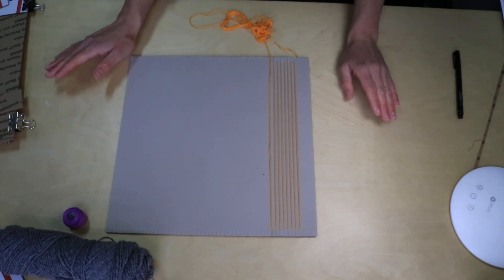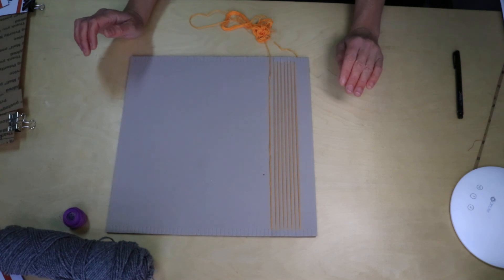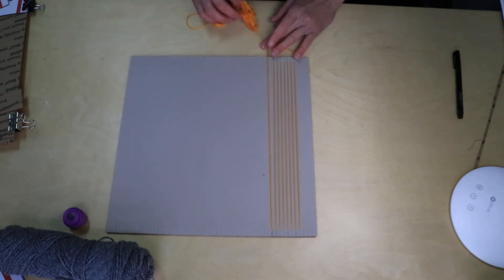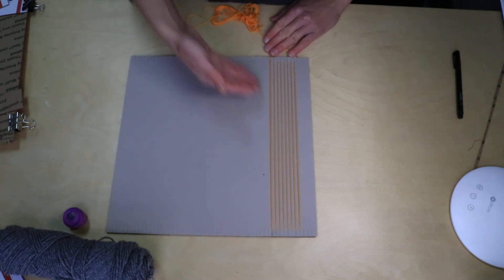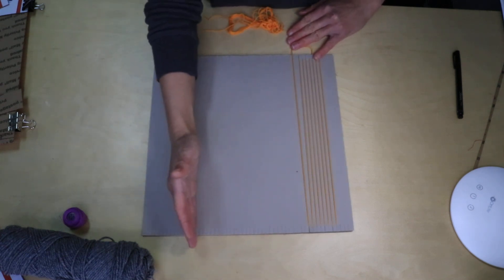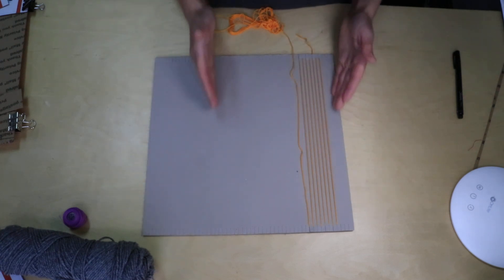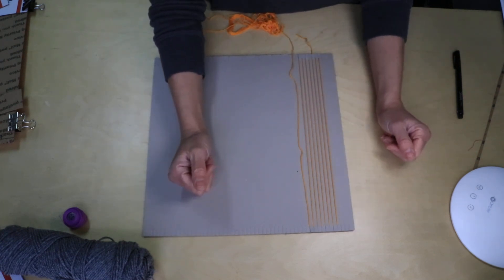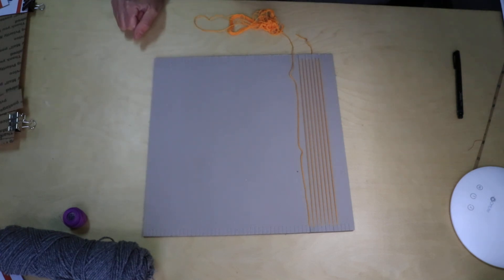So I will not subject you to watching me warp the rest of this loom, but I'm going to keep going back and forth between these tabs probably until I reach about here or so, because this is how big I want my weaving to be. I will see you here.